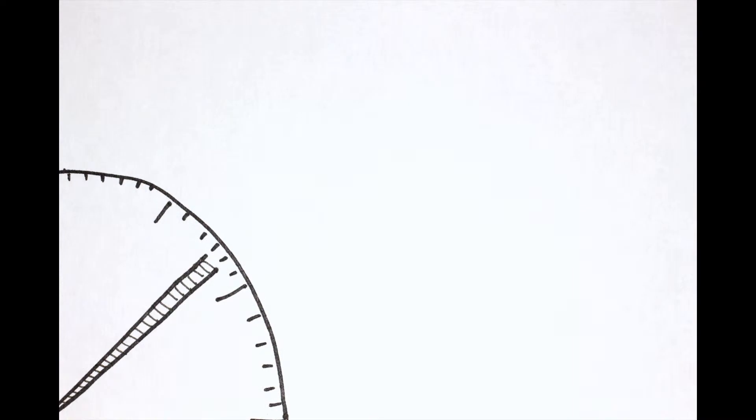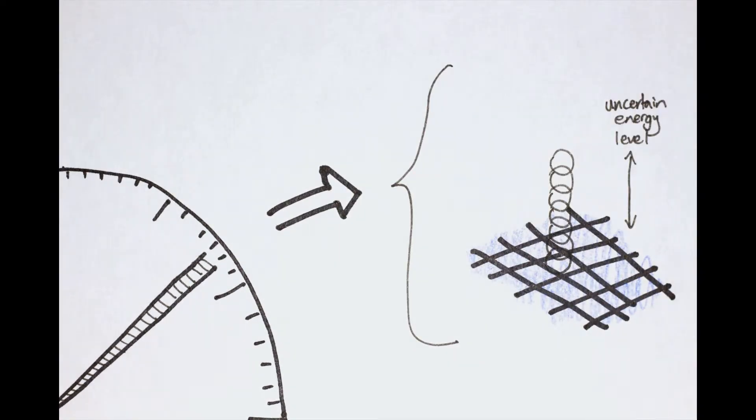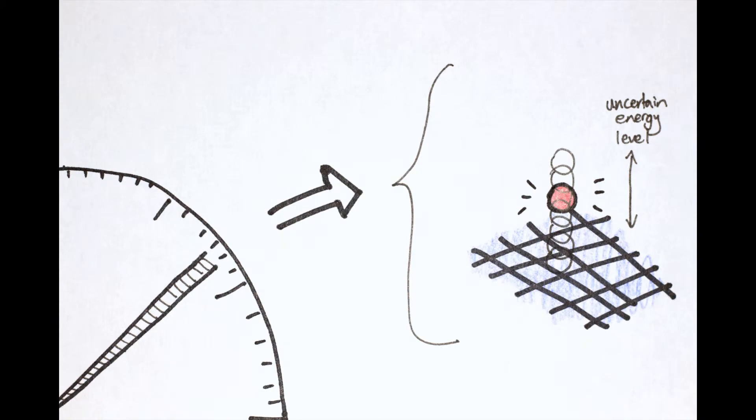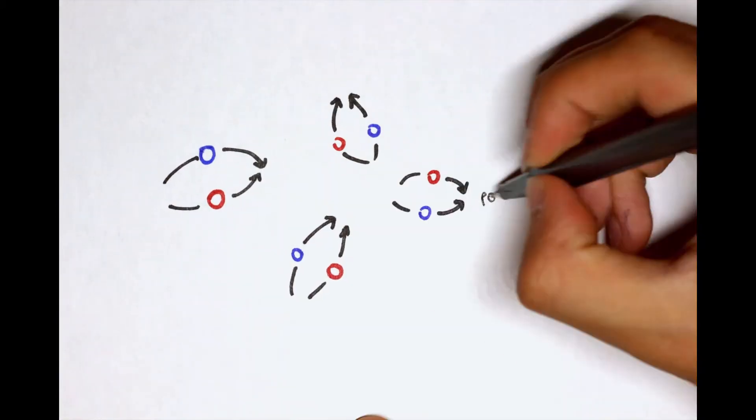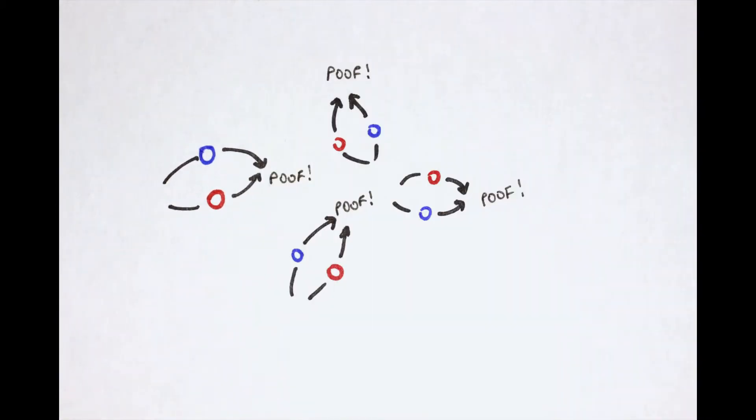If we increase the certainty for time to an extremely short interval, the uncertainty for energy rises. So for very short time intervals, the quantum field becomes a blur of many uncertain energy states. And within these very short time intervals, it's possible for the quantum field to spontaneously acquire enough energy to create a particle-antiparticle pair that quickly disappear as they annihilate each other.